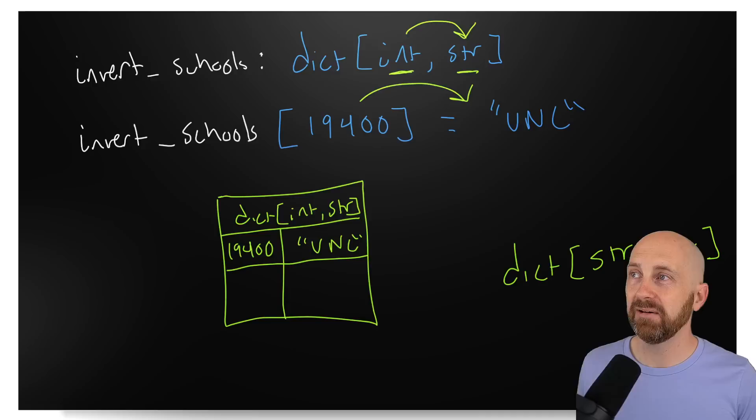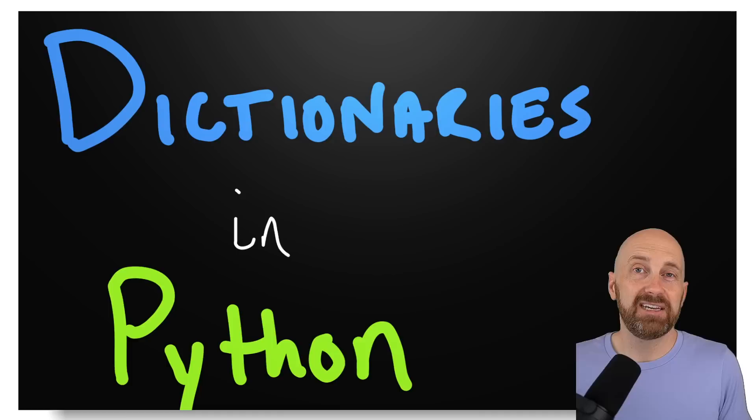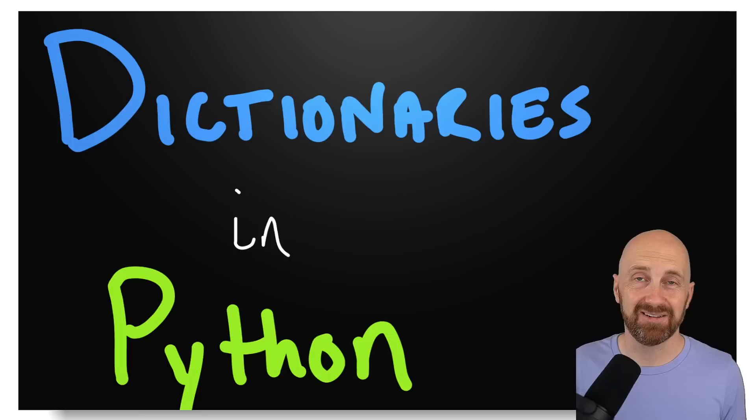Great work thinking through dictionaries — they're a fundamental data type in Python and many programming languages. Dictionaries are like lists in that we can store many values, but very different in that we get to choose how we index our keys. The order doesn't matter as much as being able to quickly look up: does this key exist? What is the value associated with that key? With lists, order matters and indexing starts from zero. Dictionaries are a very valuable data structure to understand.